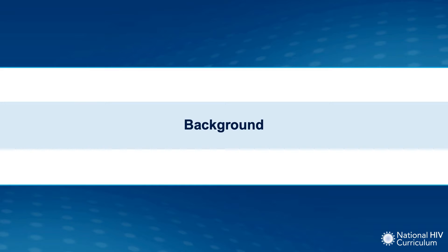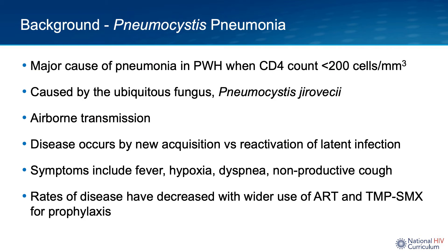Let's dive right into the background. Pneumocystis pneumonia, which I will refer to as PCP, is a major cause of pneumonia in people living with HIV with advanced immunosuppression, specifically when a CD4 count drops to below 200. PCP is caused by Pneumocystis jirovecii, a ubiquitous organism that has been classified as a fungus. PCP spreads by the airborne route, with disease occurring either by new acquisition of infection or by reactivation of latent infection.